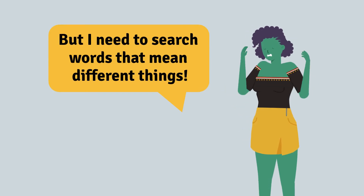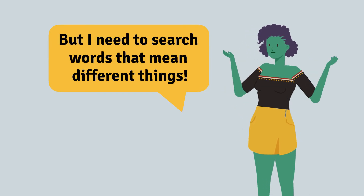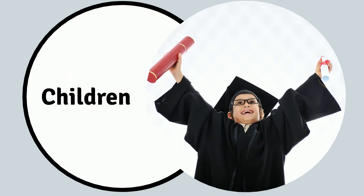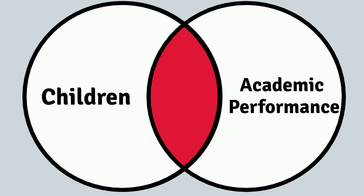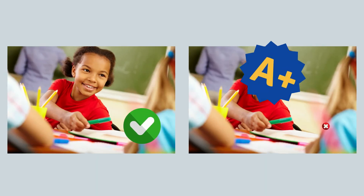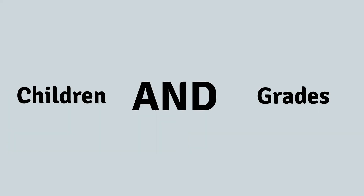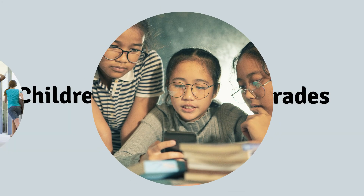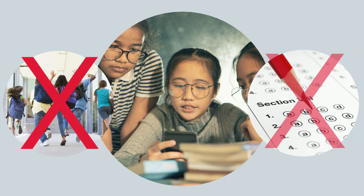But what if we want to combine words that mean different things? Suppose you're researching children's academic performance — we want research that is about children and academic performance. We use AND to connect different things. Children get grades, but grades and children are not the same thing. This search will find sources that use the word children and the word grades, but not sources just about children or just about grades.